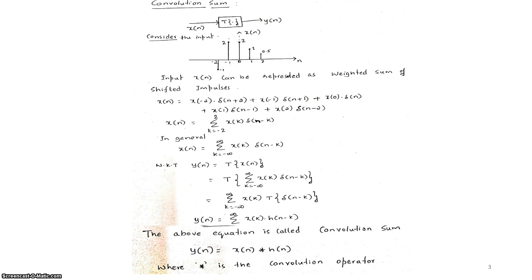There are two types of systems: discrete-time systems and continuous-time systems. For a discrete-time system, the impulse response representation is called the convolution sum, whereas for a continuous-time system it is called the convolution integral.